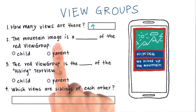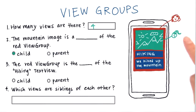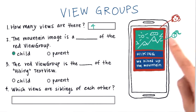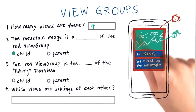Next, the mountain image is a child or parent of the red view group. If I draw in the faces, hopefully you remember that the image view is a child of the red view group.